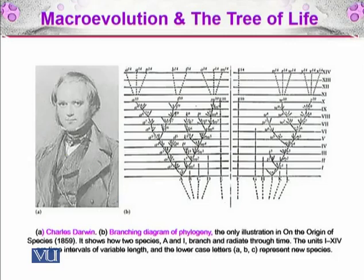The units 1 to 14 are the time intervals of variable length, and the lowercase letters such as A, B, C are showing new species. So in this you can see a branching structure, which is typical when a species breaks into two more species.